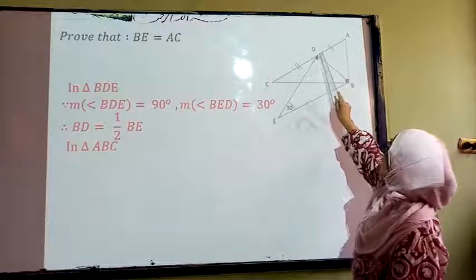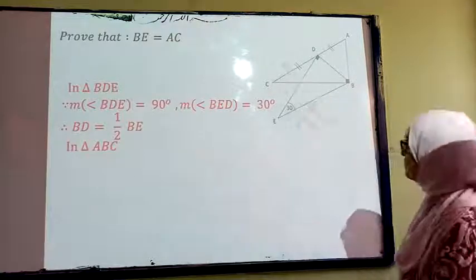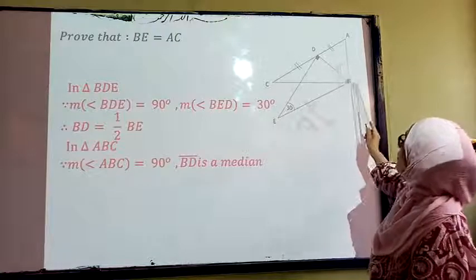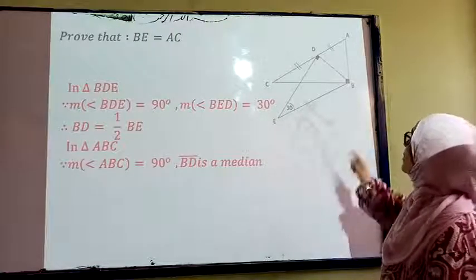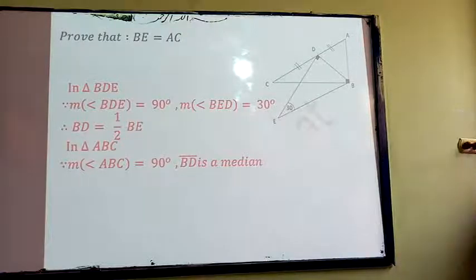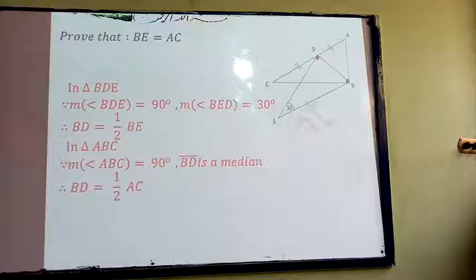So, BD equals half BE. Since BD equals half BE and at the same time equals half AC. Therefore, BE equals AC.